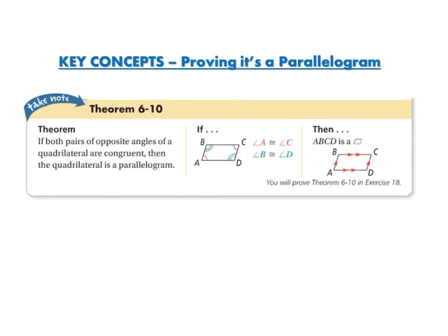The next theorem for proving a quadrilateral is a parallelogram: if both pairs of opposite angles of a quadrilateral are congruent — those two and those two — then the quadrilateral is a parallelogram. So if angle A is congruent to angle C and angle B is congruent to angle D, then the quadrilateral is a parallelogram.